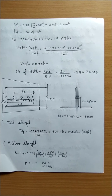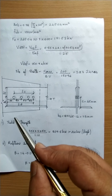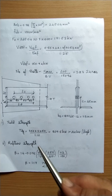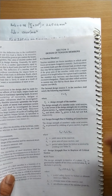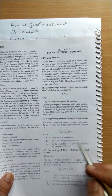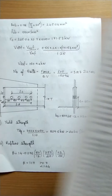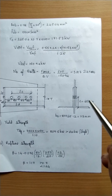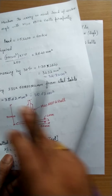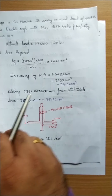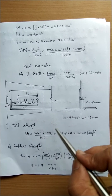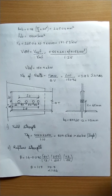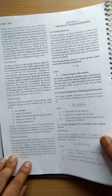Now we find the tensile strength of the chosen double angle section. First, design strength due to gross yielding: Tdg = Ag·fy / γm0 (page 32). For 2 ISA 80×80×12, Ag = 3562 mm², so Tdg = 3562 × 250 / 1.1 = 809.5 kN, which is greater than 600 kN. Hence the section is safe under gross yielding.